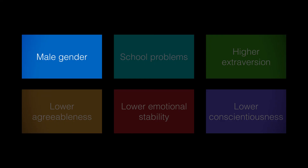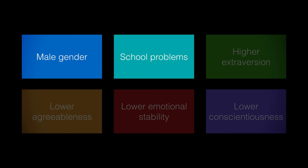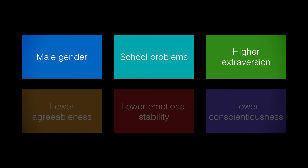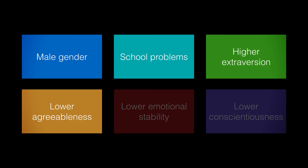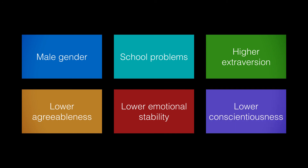Researchers conducted logistic regression analysis with the outcome variable of criminal justice sanctions imposed, and overall the model was significant. The predictors accounted for approximately 9% of the variance in criminal justice sanction. The significant predictors were gender, school problems, extroversion, agreeableness, neuroticism, and conscientiousness. There was a high probability of obtaining a criminal justice sanction if you were male, if you had more school problems during your teenage years, if you were higher in extroversion, and if you were lower in agreeableness, emotional stability, and conscientiousness.